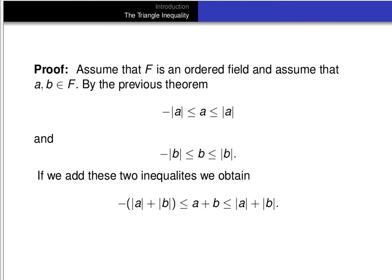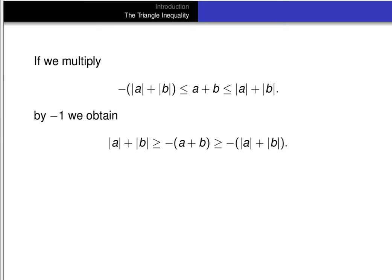We can apply a common trick and multiply this inequality by minus 1. On the left-hand side, minus quantity |a| + |b| becomes positive |a| + |b|. The less than or equal to becomes greater than or equal to, a + b becomes minus quantity a + b, and |a| + |b| becomes minus quantity |a| + |b|. We can rewrite that as: minus |a| + |b| ≤ minus (a + b) ≤ |a| + |b|.